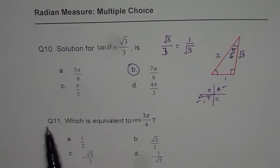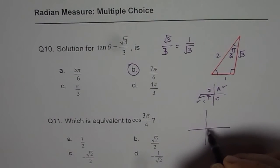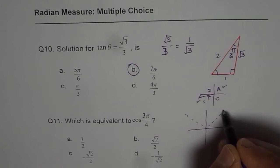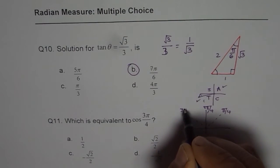Now let's go to question 11, which is equivalent to cos of 3π by 4. So that means our position here is: this is π by 4, 2π by 4, and that is 3π by 4.